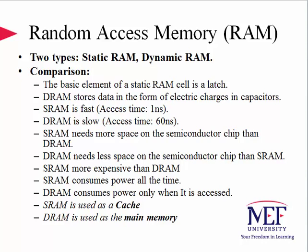The basic element of a static RAM cell is a latch. DRAM, instead of a latch, stores data in the form of electric charges in capacitors, which makes SRAM fast and DRAM slow. SRAM needs more space on the semiconductor chip and uses more transistors. DRAM needs less space because each bit cell only takes about one capacitor and one transistor on a silicon wafer. SRAM is therefore more expensive than DRAM and consumes more power all the time, whereas DRAM consumes power only when it is accessed.